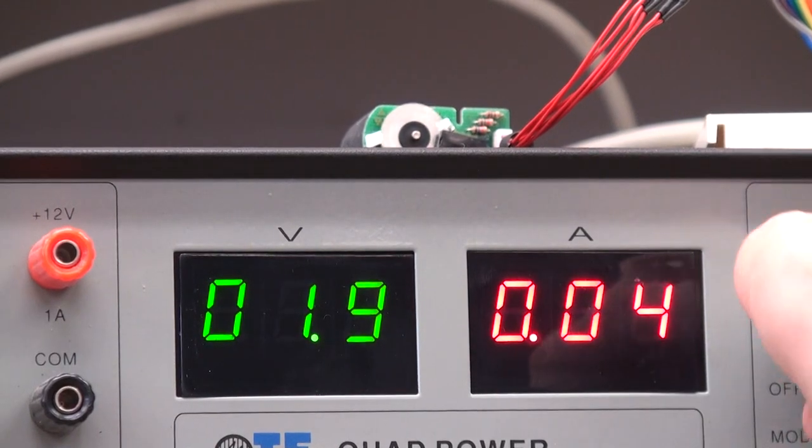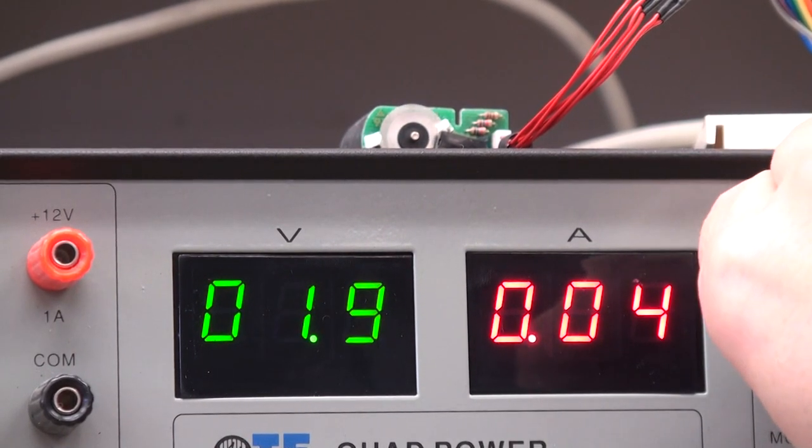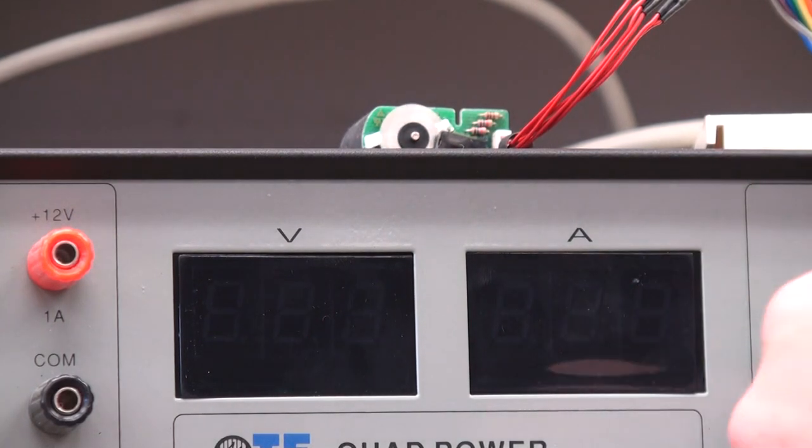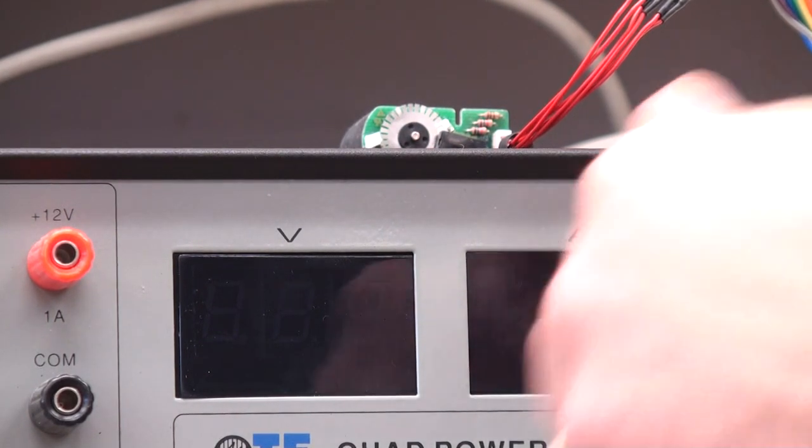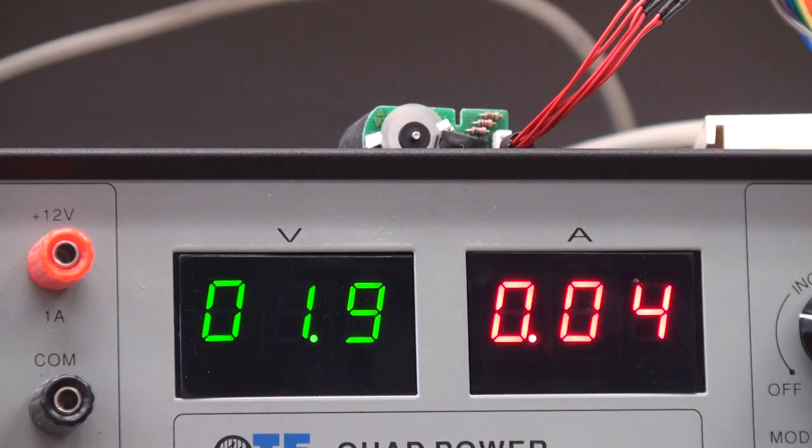We can see the motor speed up and slow down. And if we reverse the polarity, we can see the motor going in the opposite direction.